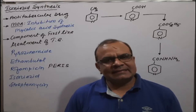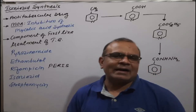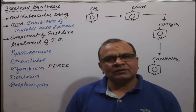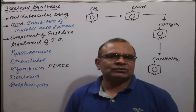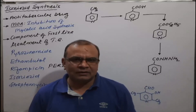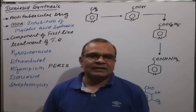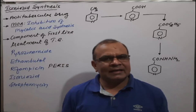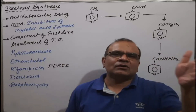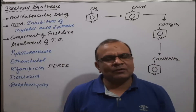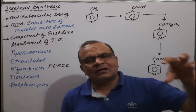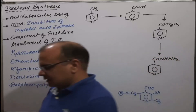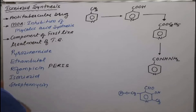Today we will discuss the synthesis of isoniazid. Isoniazid belongs to the anti-tubercular drug category, which is a very important drug from both a pharmacological and synthetic point of view. It is a first-line category component.